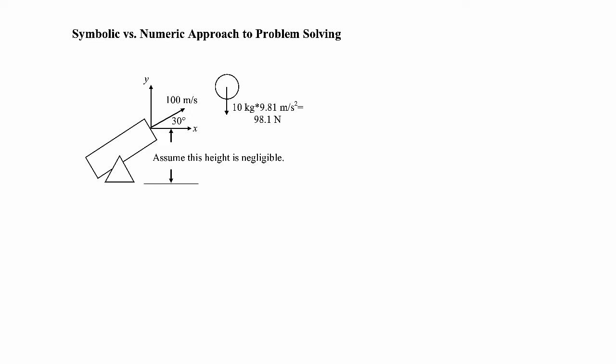In this video we'll talk about the difference between taking a symbolic versus a numeric approach to problem solving. We're going to use a very simple example of a cannon shooting a projectile — the ballistic trajectory of a cannonball. I'm going to work it out two different ways: first with numerical values, then again with symbols. The purpose is to show why using symbols is a much better approach than using numbers.